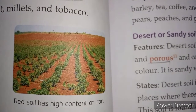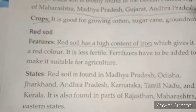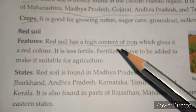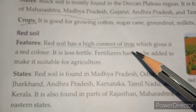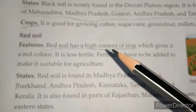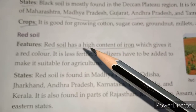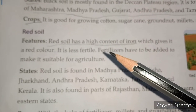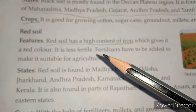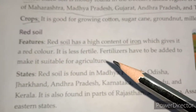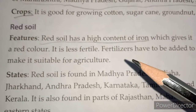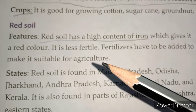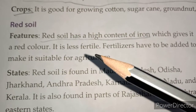Let's start with this. Red soil has a high content of iron which gives it a red color. It is less fertile. Fertilizers have to be added to make it suitable for agriculture.